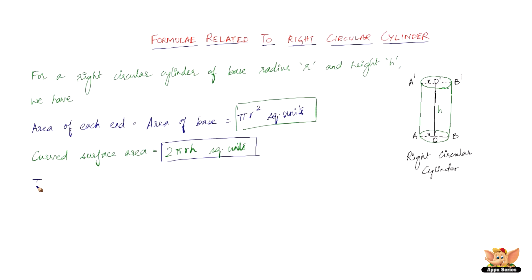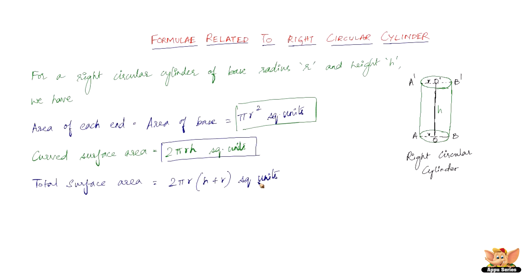Next comes the total surface area. The total surface area includes the curved surface area plus the two circular ends as well. So the total surface area of a right circular cylinder combines both the curved portion and the two circular bases.